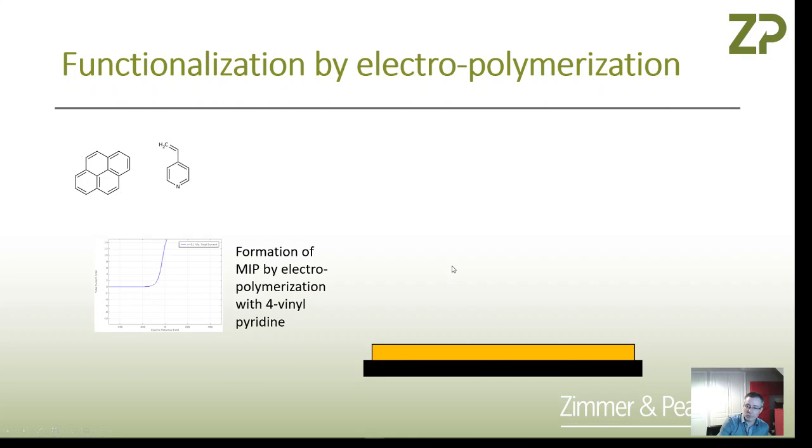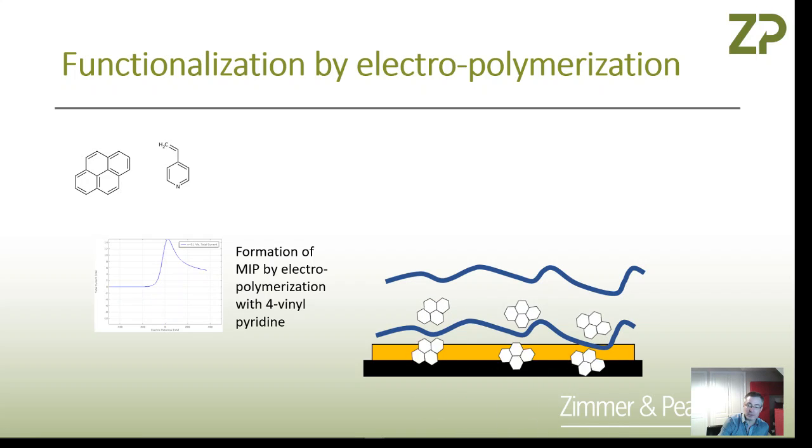Every time you do a cyclic voltammogram, you lay down new polymer. The monomer polymerizes in the presence of pyrene, and each time you lay down polymer, you get pockets full of pyrene. You're forming the polymer around the template—that's the MIP, the molecular imprinted polymer.